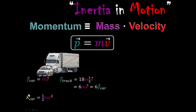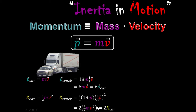Now let's connect that back to kinetic energy: one-half mass times velocity squared. If the truck had 18 times as much mass and one-third as much velocity, remember the velocity term gets squared, so one-third squared gives one-ninth. We'd have 18 over 9, which is 2. So the truck would have six times as much momentum but only twice as much kinetic energy, because the velocity gets squared in kinetic energy but not in momentum.